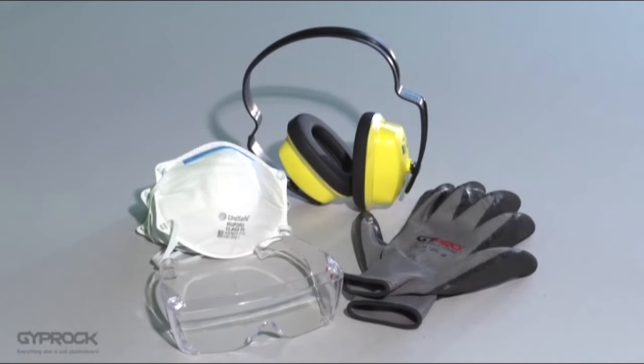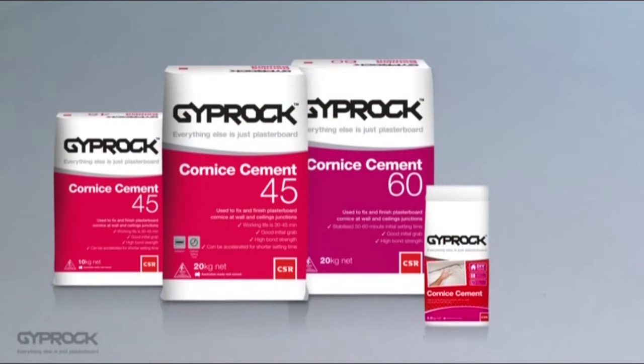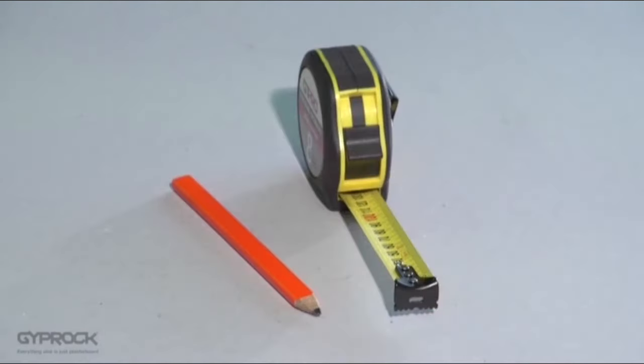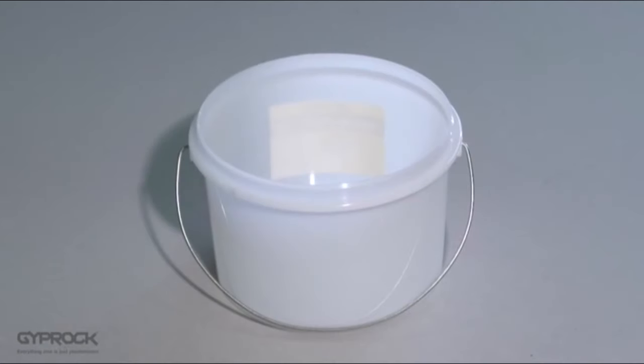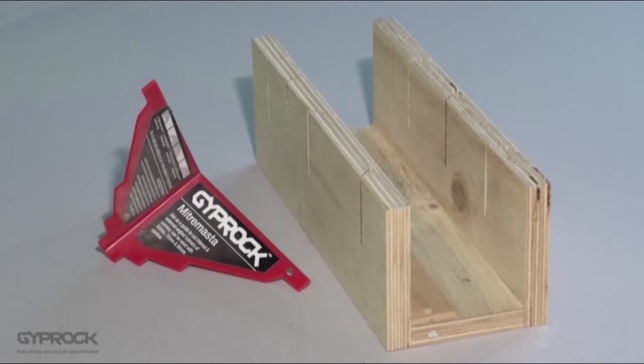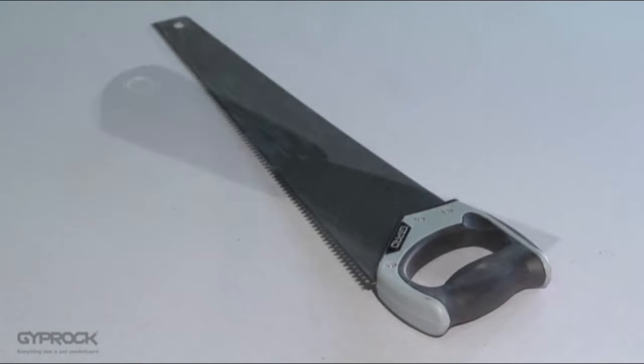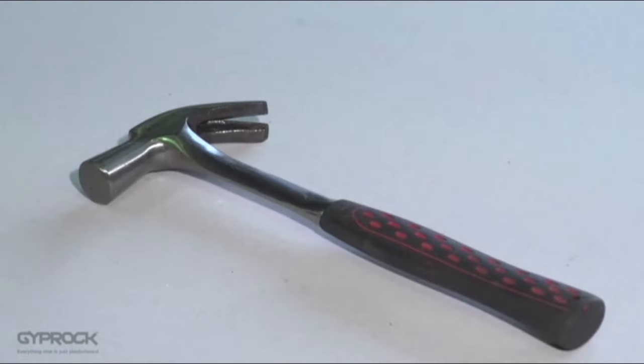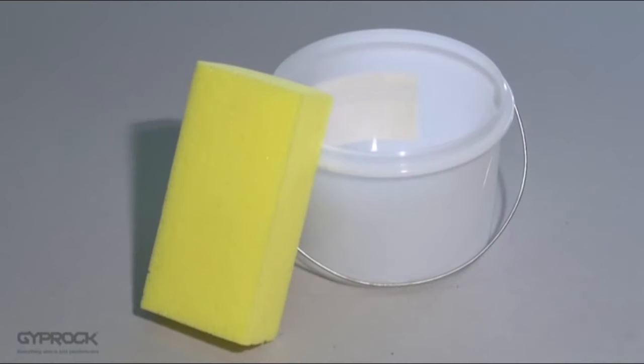Here's what you'll need to get started. Gyproc cornice cement which is available in a fast setting dry powder in a few different setting times or in a slower drying pre-mixed formula. A tape measure and pencil. A small bucket and clean water for mixing if using the dry cornice cement. Gyproc mitre master for Cove cornice or a mitre box for any cornice profile. A fine tooth saw. 38 millimeter broad knife. Cornice tool. Hammer and nails. Water and a sponge for cleaning up.